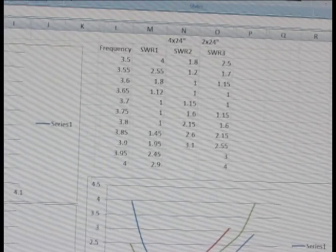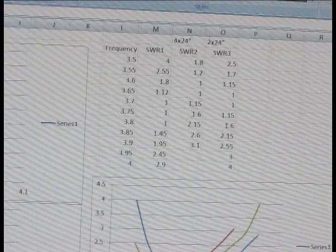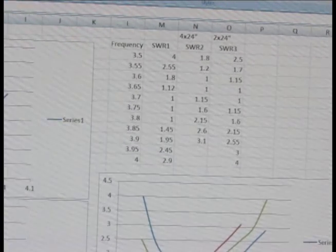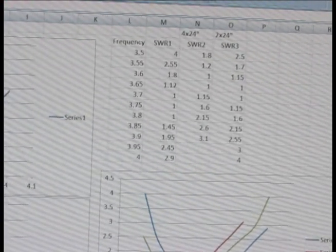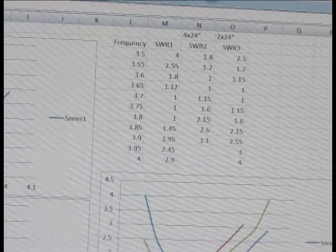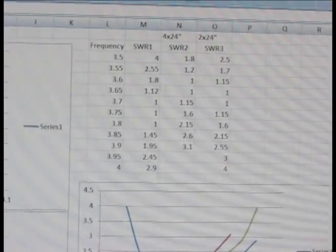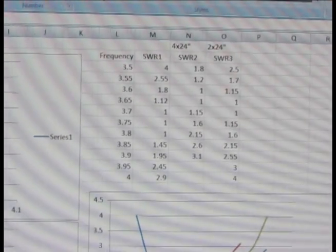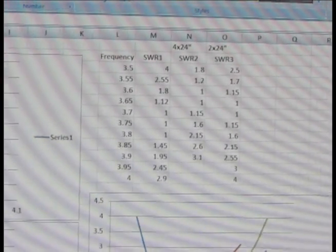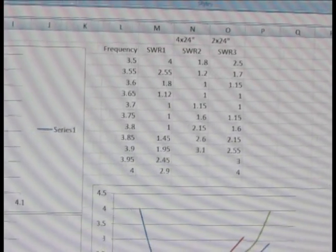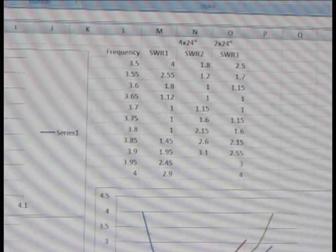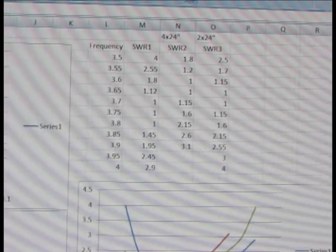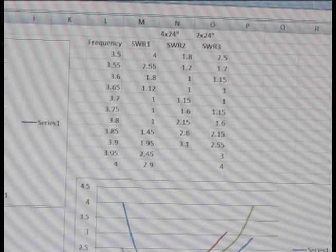The standing wave 1 series on the farthest left side was without the capacity hat. And then the next column, standing wave ratio 2, was with two hot rods installed as the capacity hat. And then the third column was with one hot rod up there with the aluminum block. I just wanted to lower the resonant frequency a little bit.